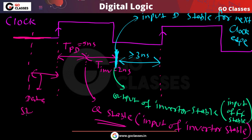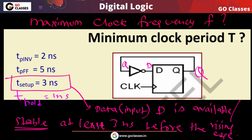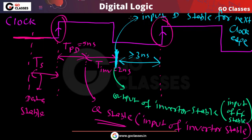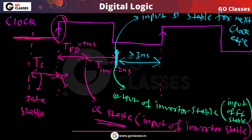To explain further: setup time says data must be stable at least 3 nanoseconds before every rising edge. Hold time says data must remain stable for 1 nanosecond after every rising edge. But the propagation delay of the flip-flop and the hold time overlap — the flip-flop's own propagation delay keeps the data stable through the hold time window.